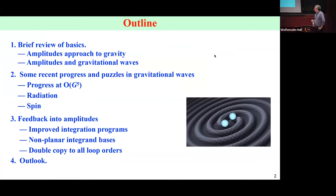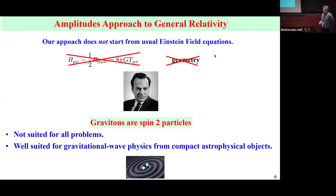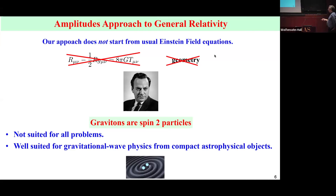The normal way of approaching Einstein gravity is, of course, to use the Einstein field equation and geometry. That's not how we do it in amplitudes. In amplitudes, we start from the idea that gravitons are spin-two particles. Just from that alone, you can derive a complete set of equations to solve problems specifically in perturbation theory — very well suited to gravitational wave physics from compact astrophysical objects.